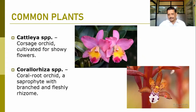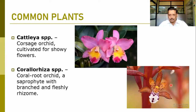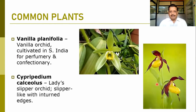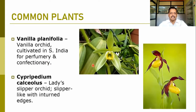There is Corallorhiza species — commonly known as the coral root orchid. It is a saprophyte with a branched and fleshy rhizome. Saprophyte means growing on dead and decayed organisms. We know the vanilla flavor — this is Vanilla planifolia, the only vanilla orchid cultivated in South India for perfumery and confectionery.